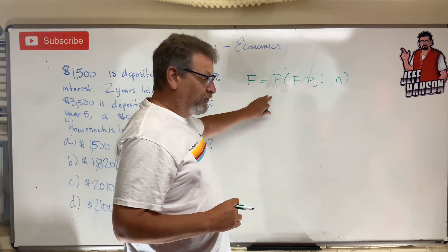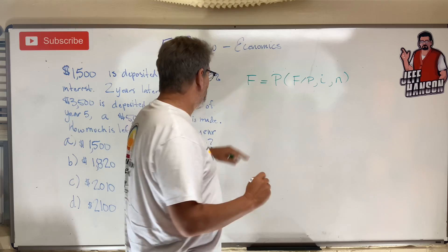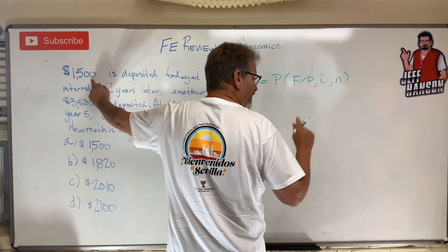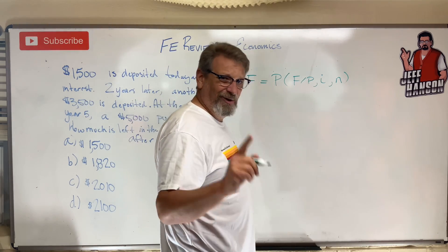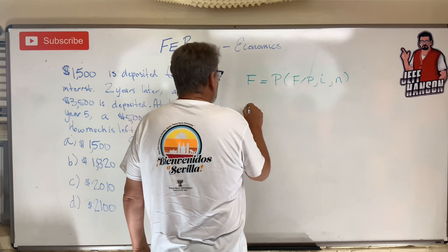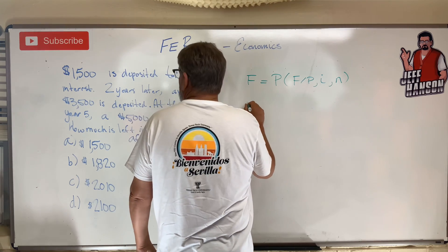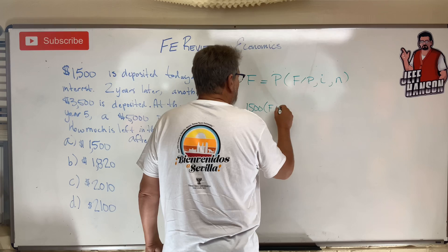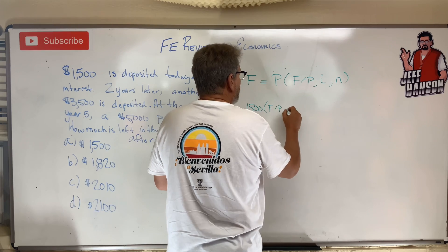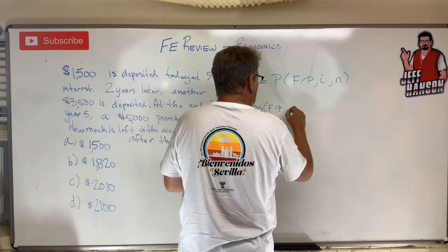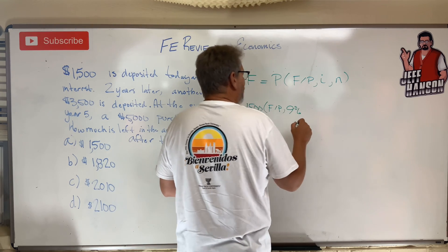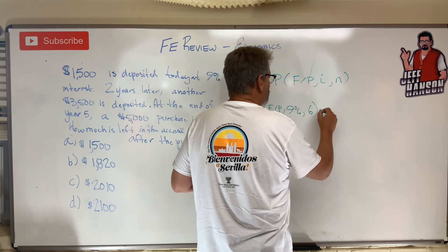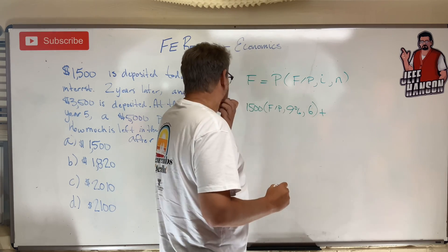First I'm going to do the initial deposit. If I'm taking that to year six, it sits in there for six years. So the initial deposit is $1,500 times F given P — what is it? 9% for six years.